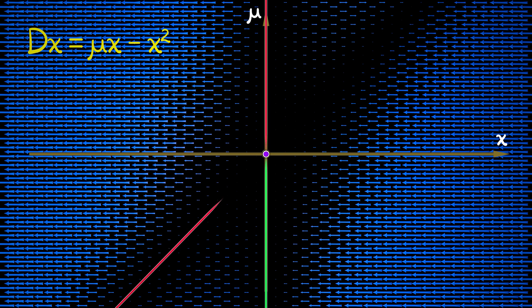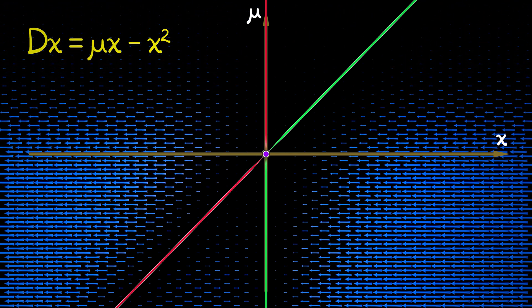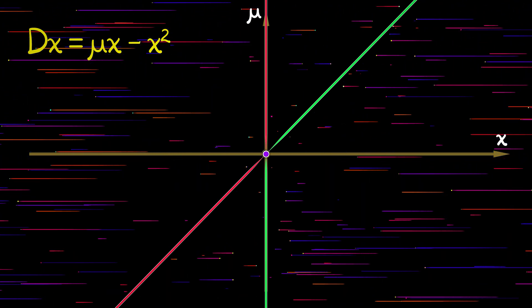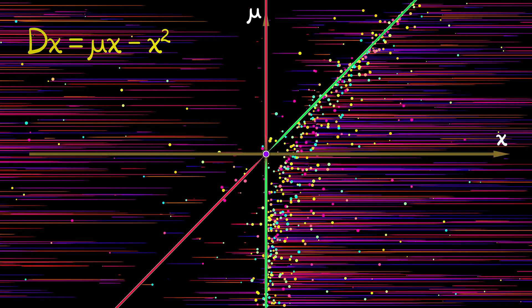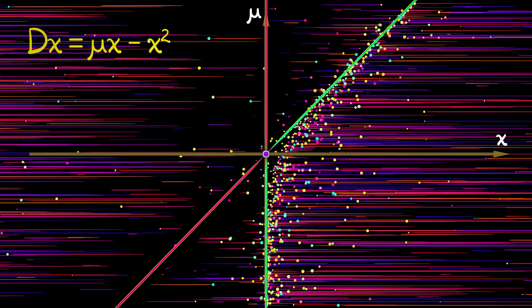And here the stabilities have flipped. When mu is negative, this is an unstable equilibrium. When mu is positive, it's a stable equilibrium. If we look at the dynamics, launch initial conditions and let them flow forwards, then what we see is that we have this bent branch of stable equilibria and this bent branch of unstable equilibria.